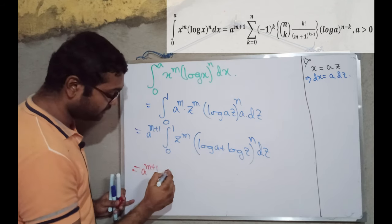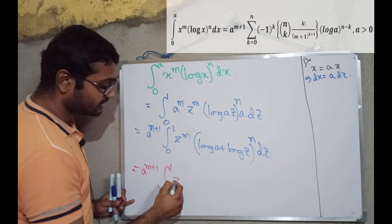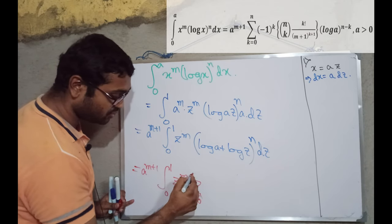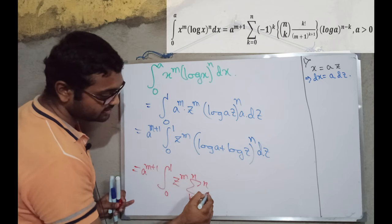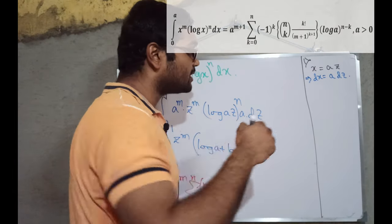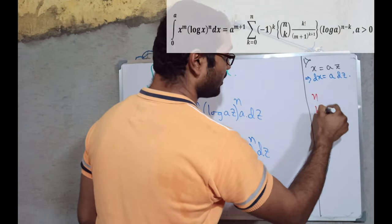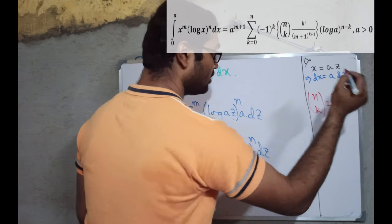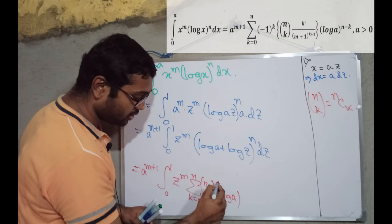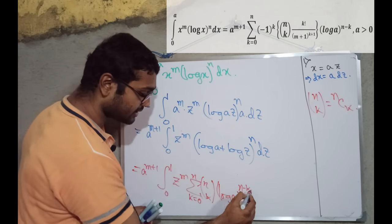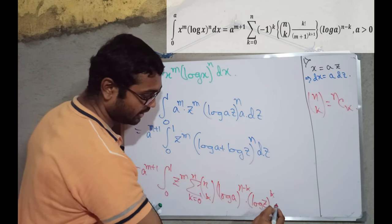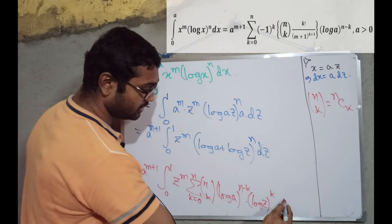Integration will remain here. And here, z to the power m. And then summation of k equal to 0 to n. n c k, or we can write it as given in the question. Those who don't know this, let me tell them. This one means n c k. So, then log of a whole to the power n minus k times log of z whole to the power k. And then dz.